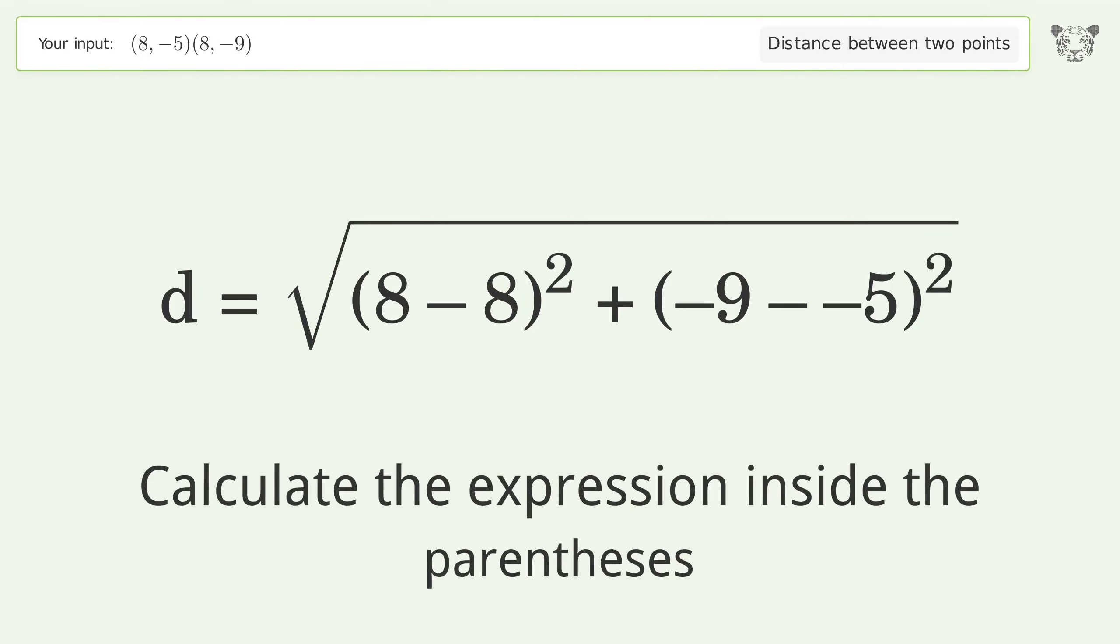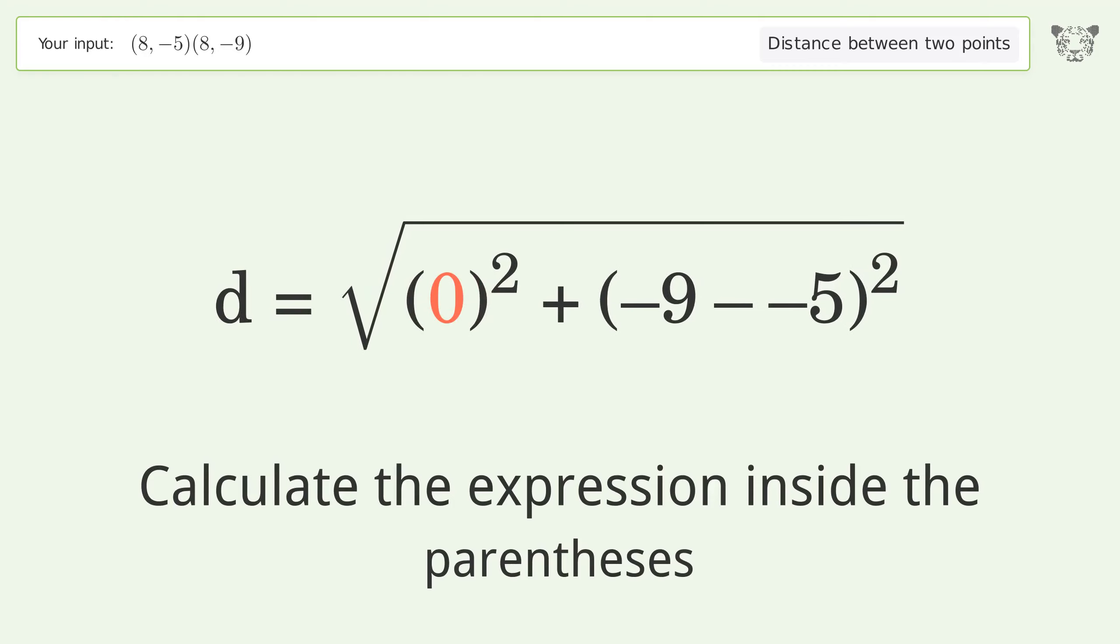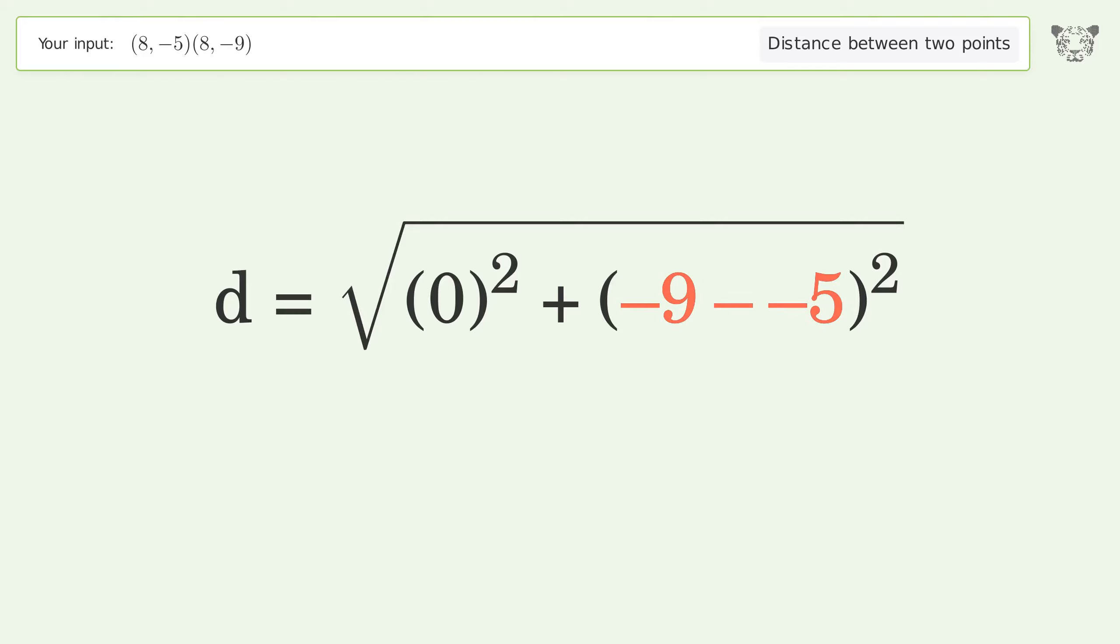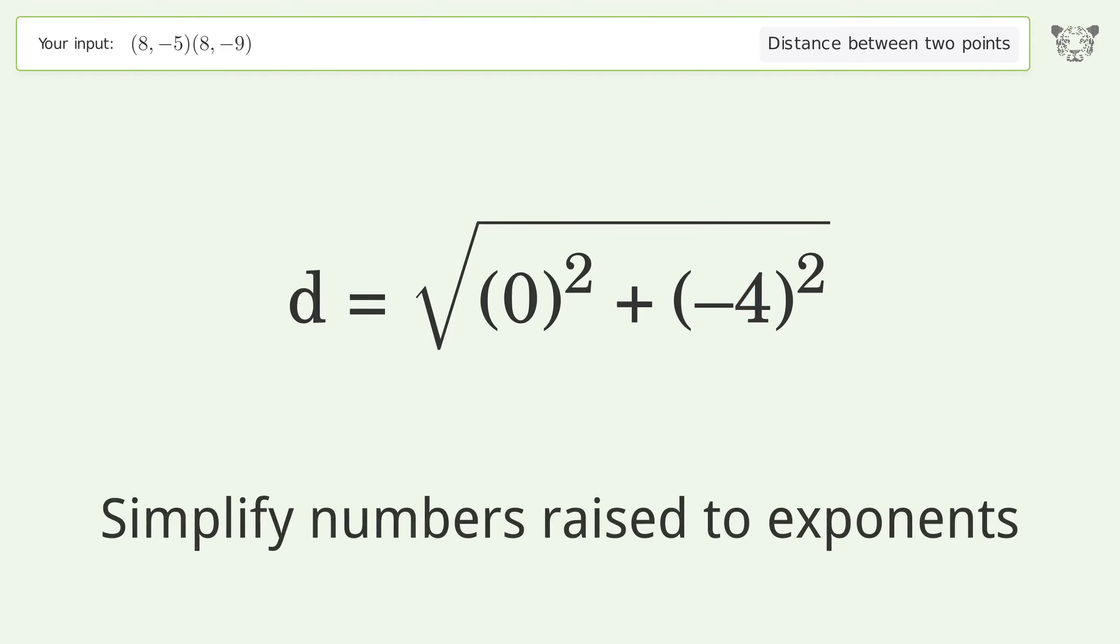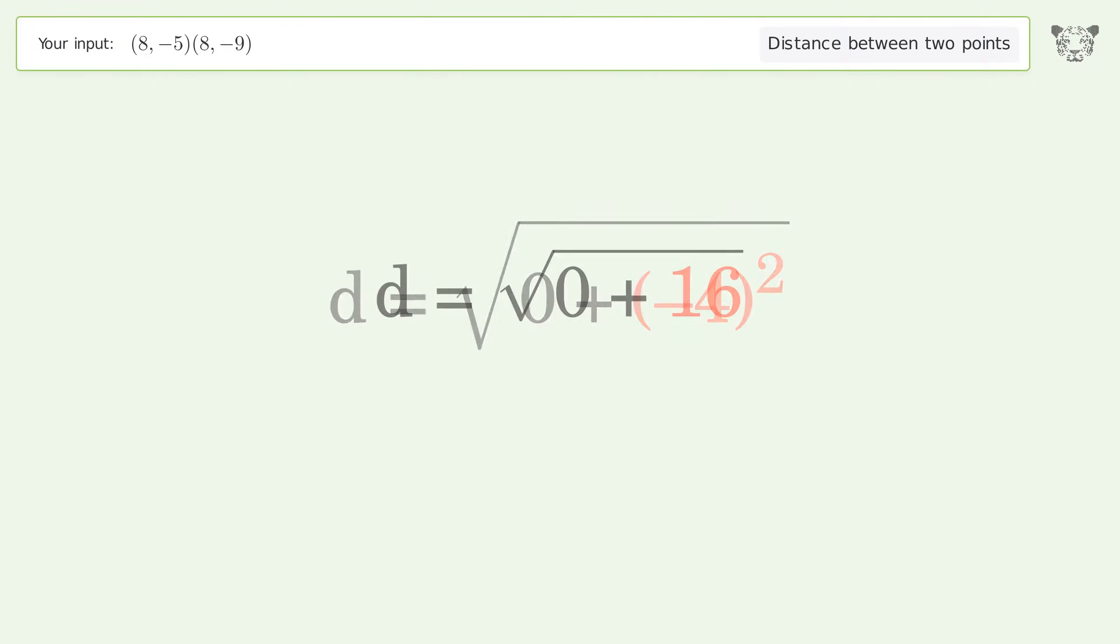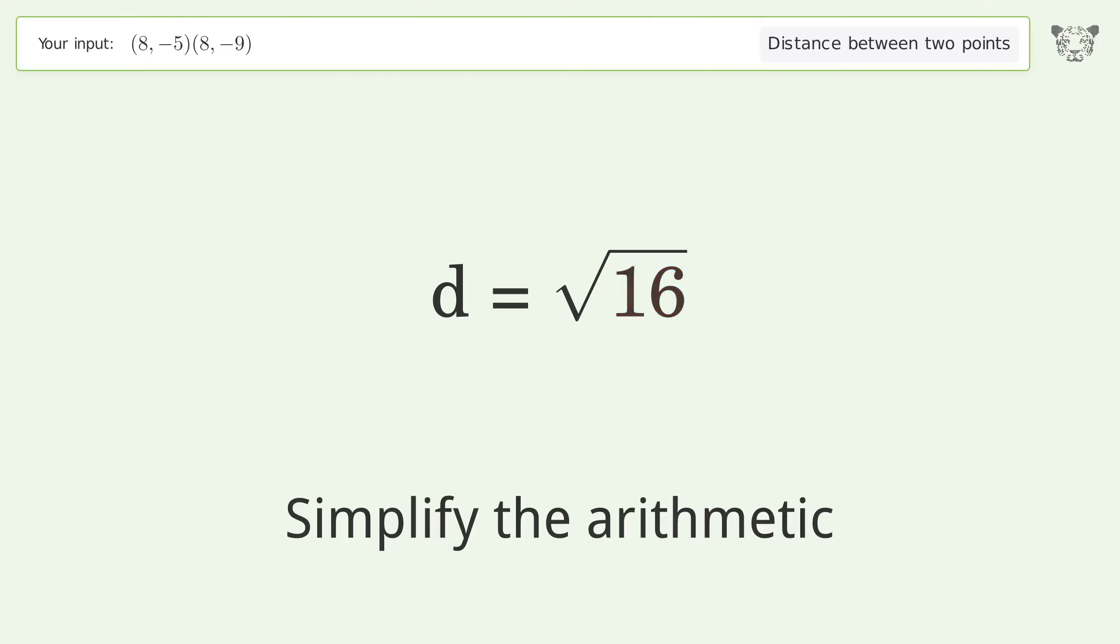Calculate the expression inside the parentheses. Simplify numbers raised to exponents. Simplify the arithmetic. And so the distance between the two points is the square root of 16, or 4.